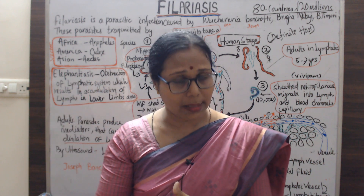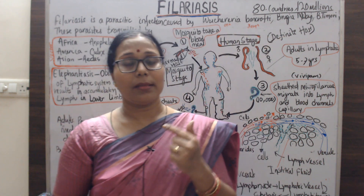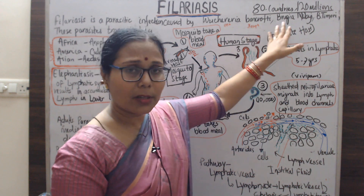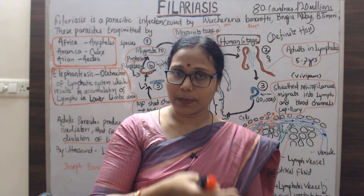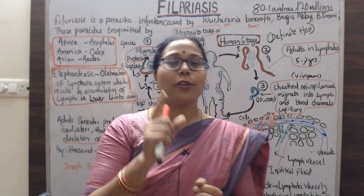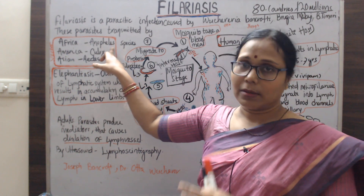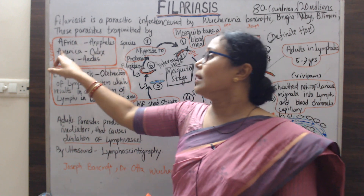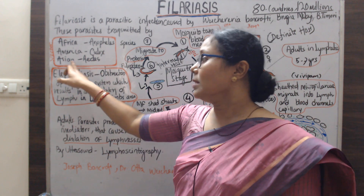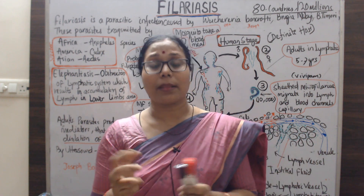Brugia malayi accounts for the remaining cases. The name Wuchereria bancrofti comes from two scientists: Dr. Otto Wucherer of Brazil, and Joseph Bancroft. These parasites are transmitted by vectors — in most of Africa, the Anopheles mosquito is the vector; in America, the Culex mosquito; and in Asian countries, the Aedes mosquito.